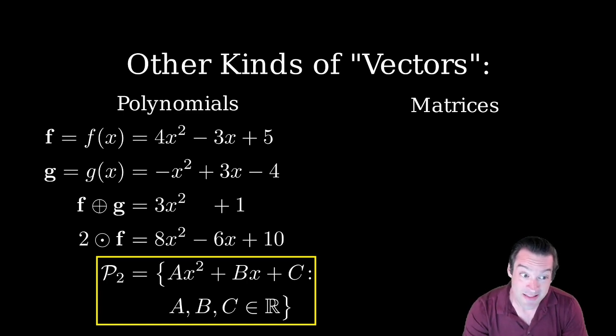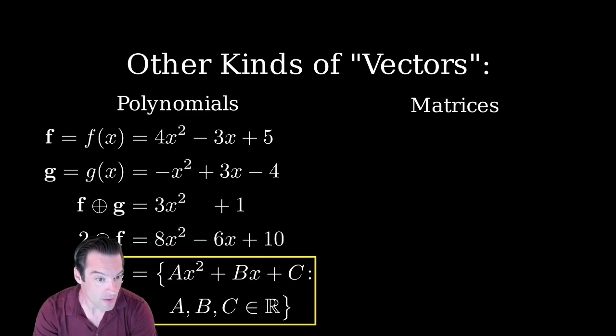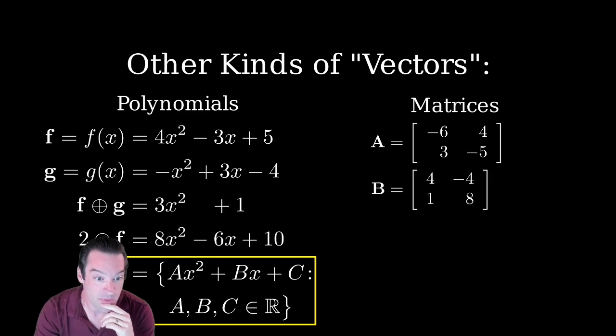And our second example is going to be to think of matrices as though they are vectors. So what might that look like? Well, let's suppose that I have a matrix of some sort. Let's say it's the matrix that has entries negative 6, 4, 3, 5. And I have another matrix. What should it mean to add those two matrices together?